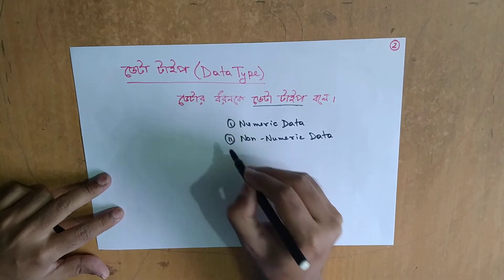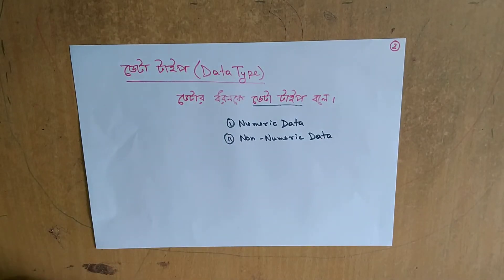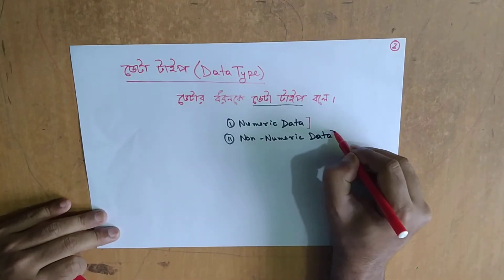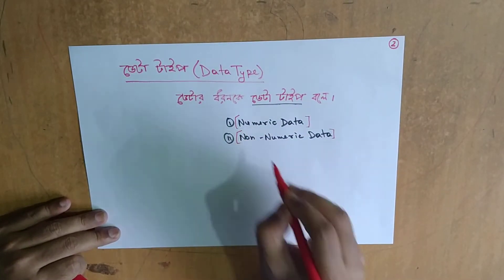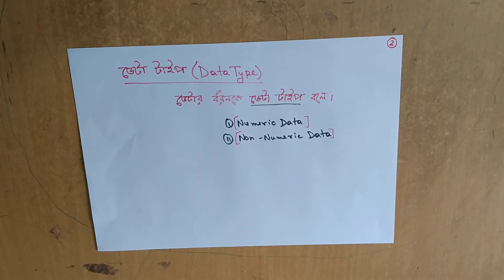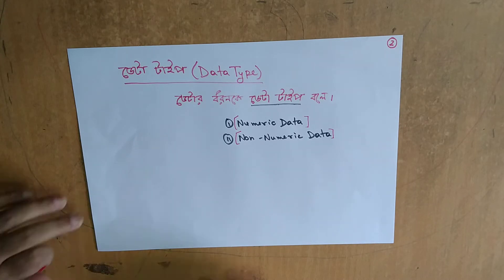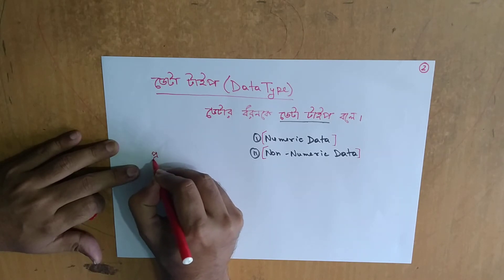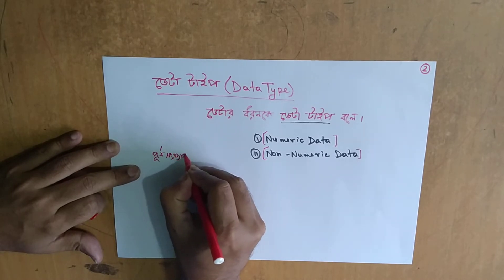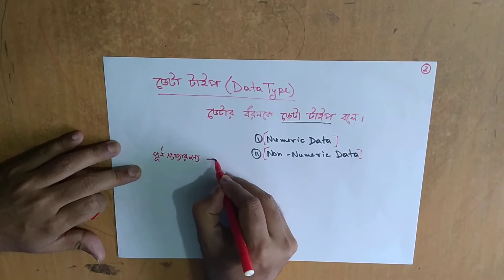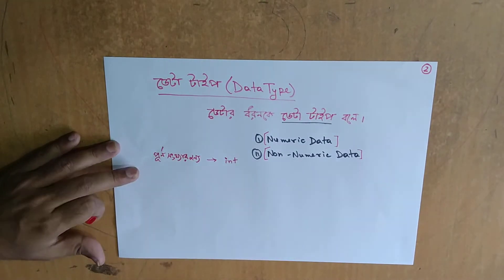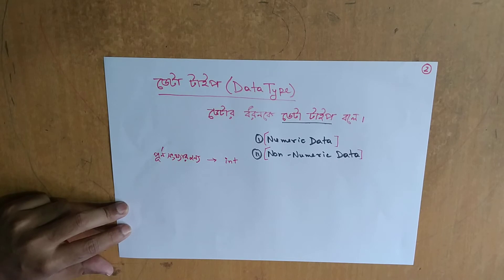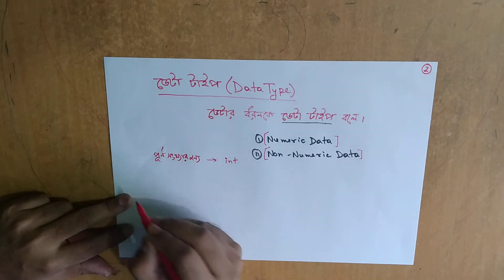There is a built-in data type. The number of data includes numeric and non-numeric types. There are a lot of data courses. The data is built-in and it includes the entire data.